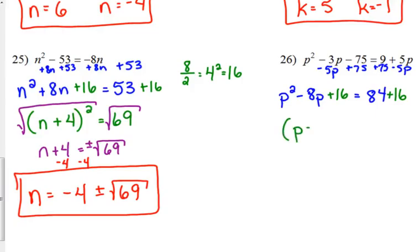This time, though, it's going to factor into P minus 4, because that was a negative right there. 84 plus 16 is 100.